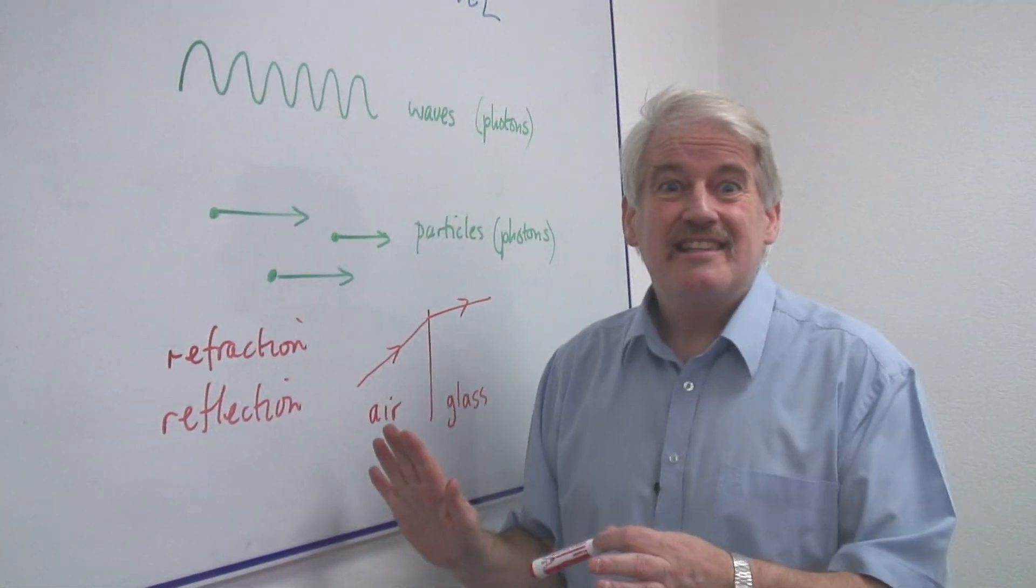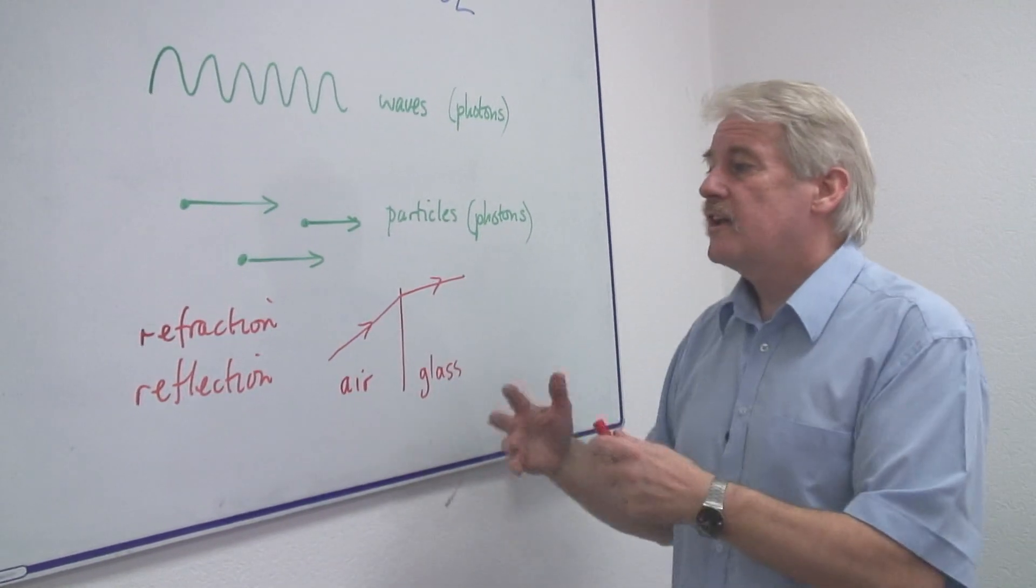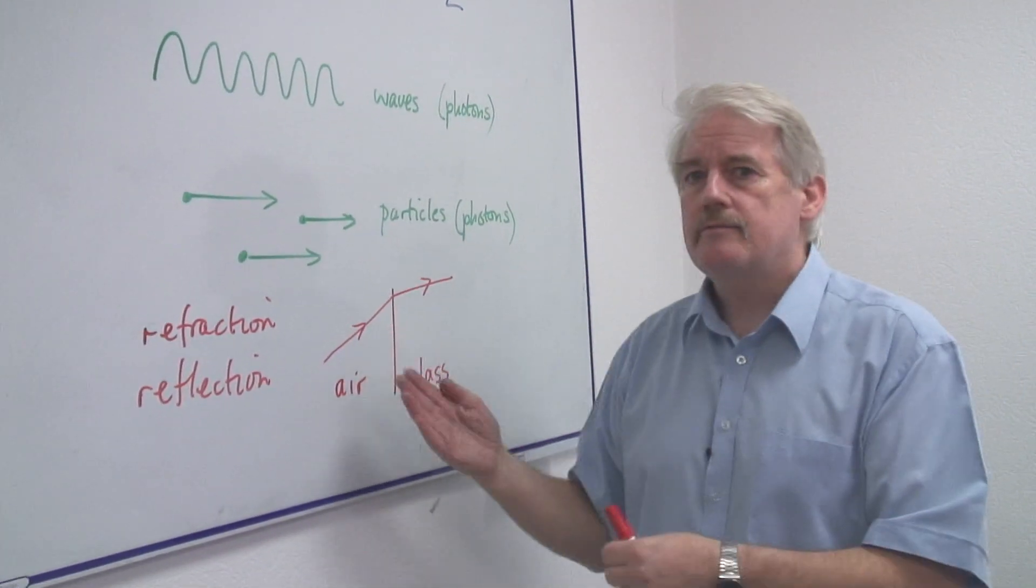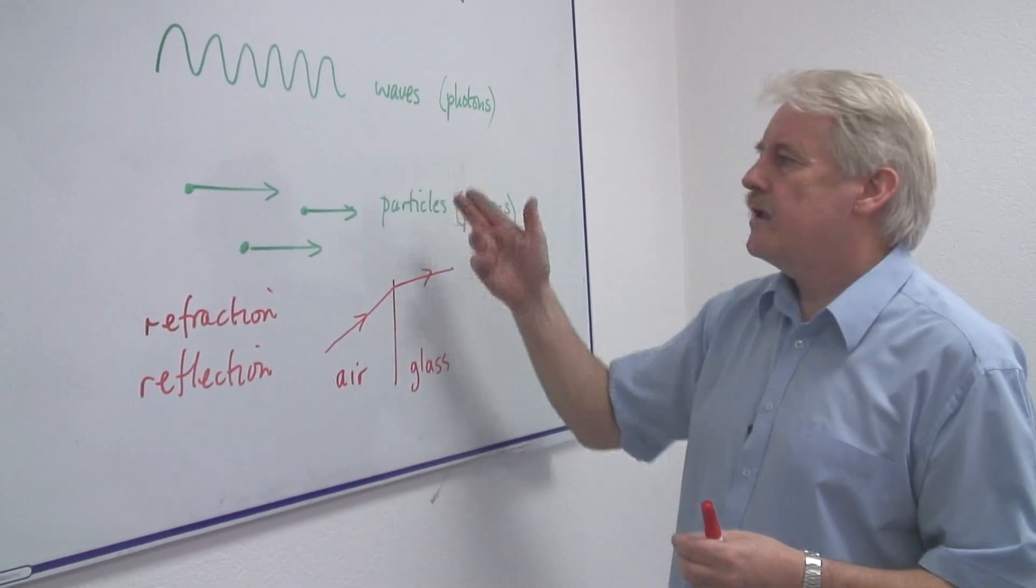Reflection was easy using either model. So in fact, we can explain how light travels, how it behaves, if we think of it as a wave or as a particle.